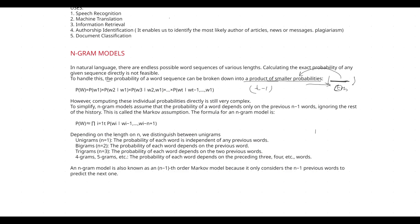Calculating the probability of individual words is still complex. To simplify, they use n-gram models. N-gram models assume that the probability of a word depends only on the previous n-minus-one words, ignoring the rest of the history. This is called the Markov assumption. The formula for an n-gram model reflects this.